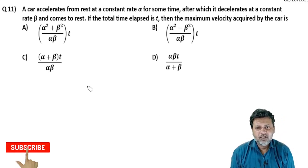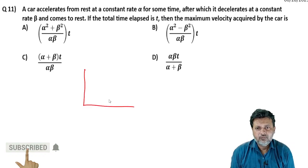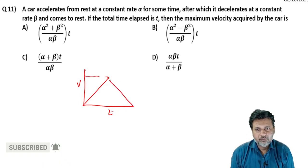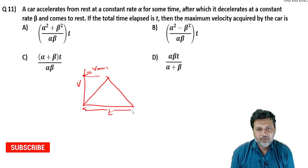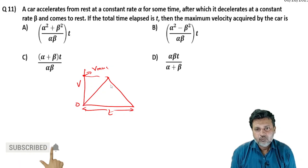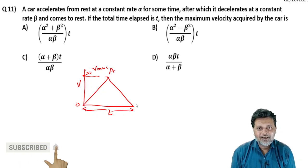सबसे पहले इसका velocity-time graph कैसा होगा। शुरू में accelerate कर रहा है, maximum velocity पर पहुंचेगा, उसके बाद decelerate करेगा। तो यह velocity हो गई maximum velocity V_max। O से A तक accelerate किया, A से B तक decelerate किया, और finally velocity 0 होगी। यहां से यहां तक का total time T है।